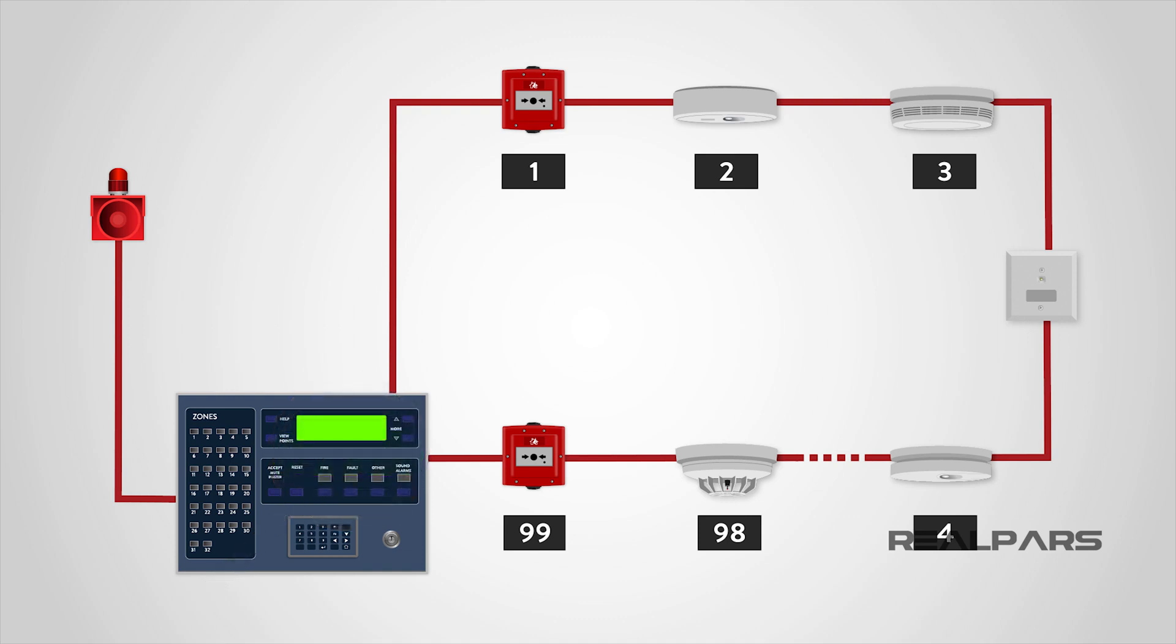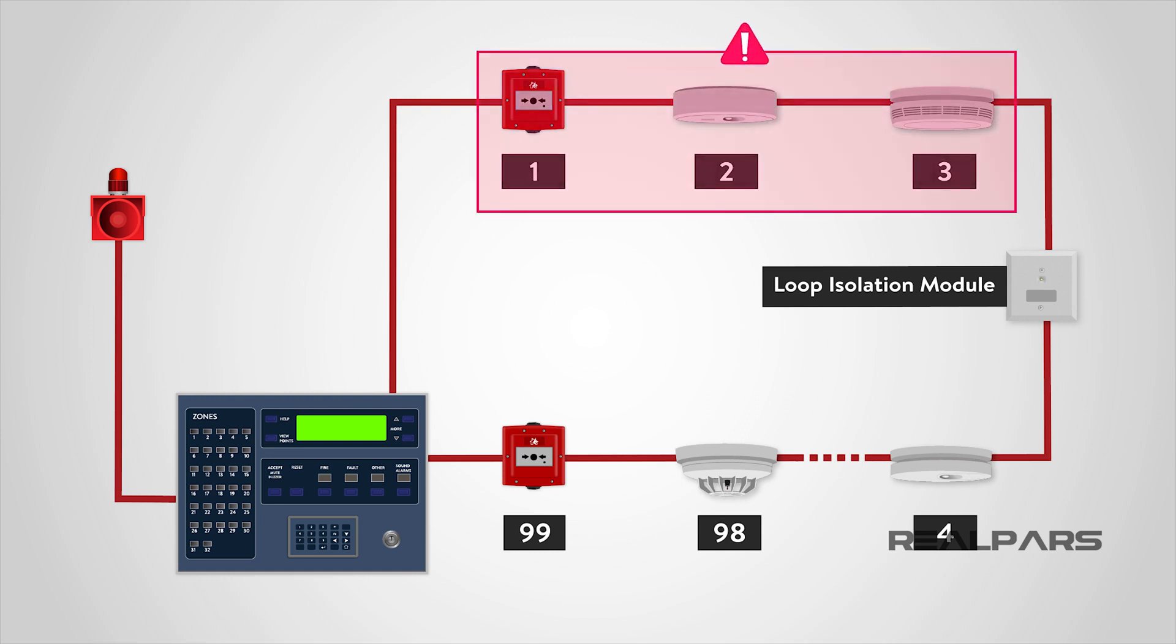The detection circuit is wired as a loop, and up to 99 devices may be connected to each loop. It is common for the loop to be fitted with loop isolation modules so that the loop is sectioned in order to ensure that a short circuit or single fault will only cause the loss of a small part of the system, allowing the rest of the system to function normally.